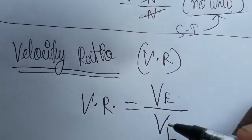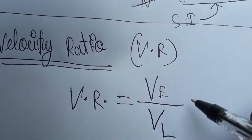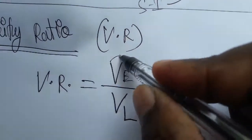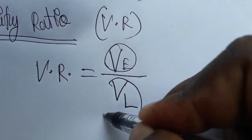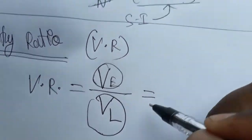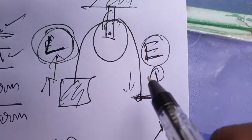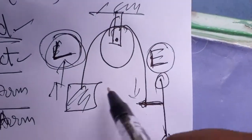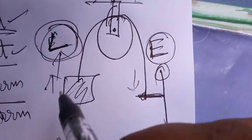Today we are going to see velocity ratio. Velocity ratio is the ratio of velocity of effort arm by velocity of load arm. If you see here, one pulley is there. Effort is whatever you are applying, and whatever it's going to lift is the load.